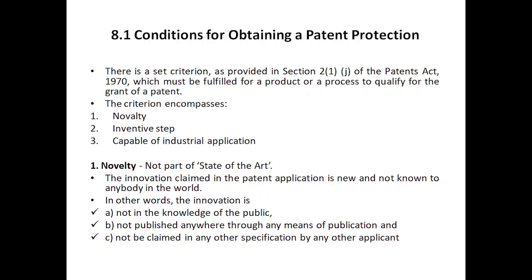The first one is novelty — it should not be part of the state of the art. You have to check new literature, do a prior art search like we do for research publications. To understand novelty, you need to read research articles, go to patent websites, go through non-patent literature like magazines and social media, everywhere — to make sure the idea or product you want to patent is not already out in the market.